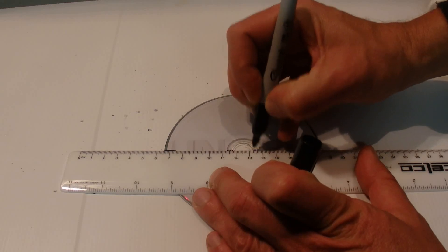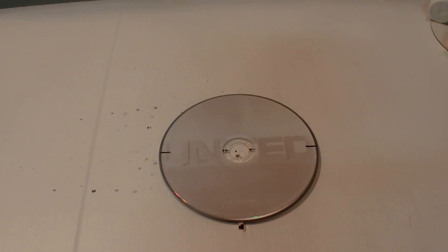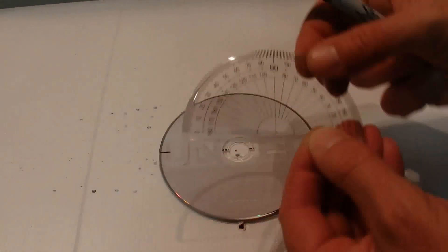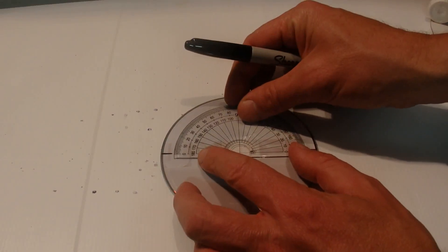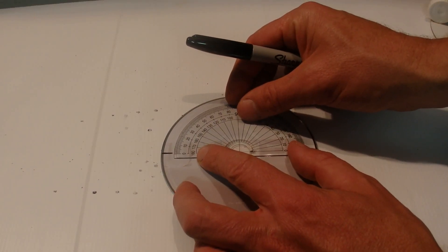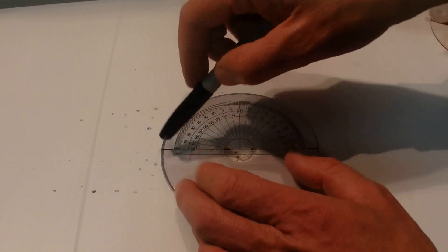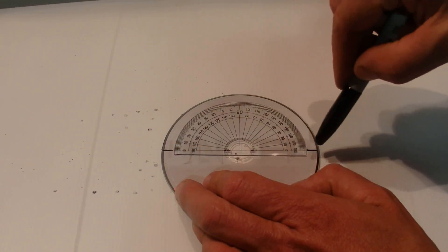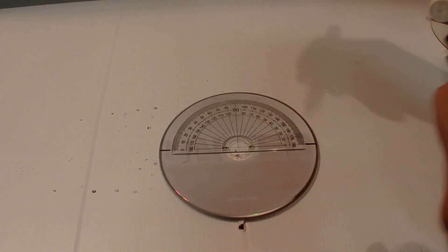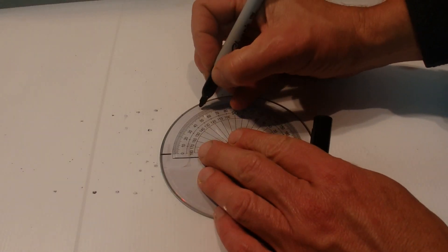Next I'll get my protractor and put that sort of dead in the center so that bottom line runs along that line you've already marked, and put a mark up there at 60 degrees and at 120, and that'll split that distance evenly.